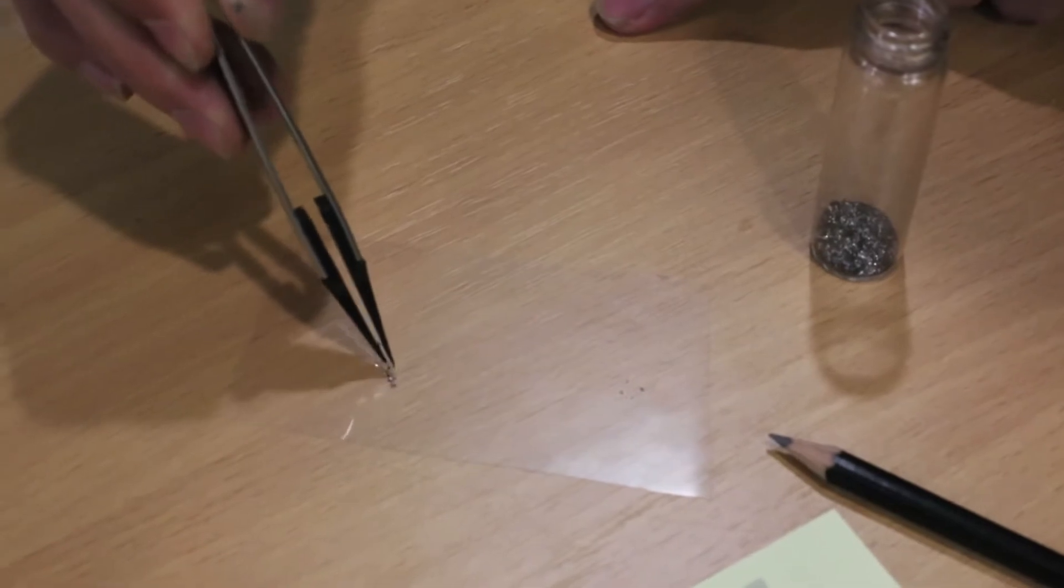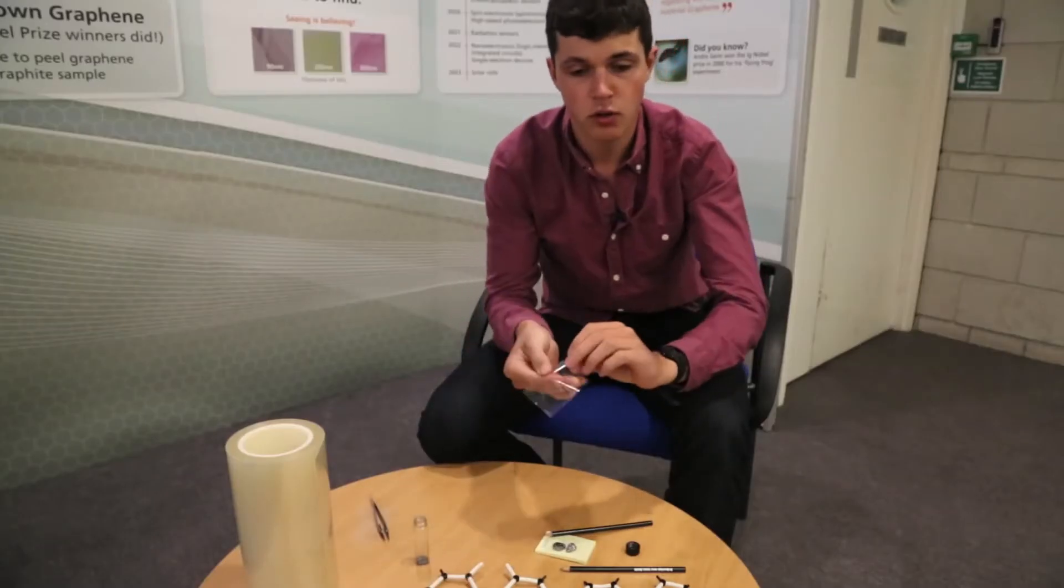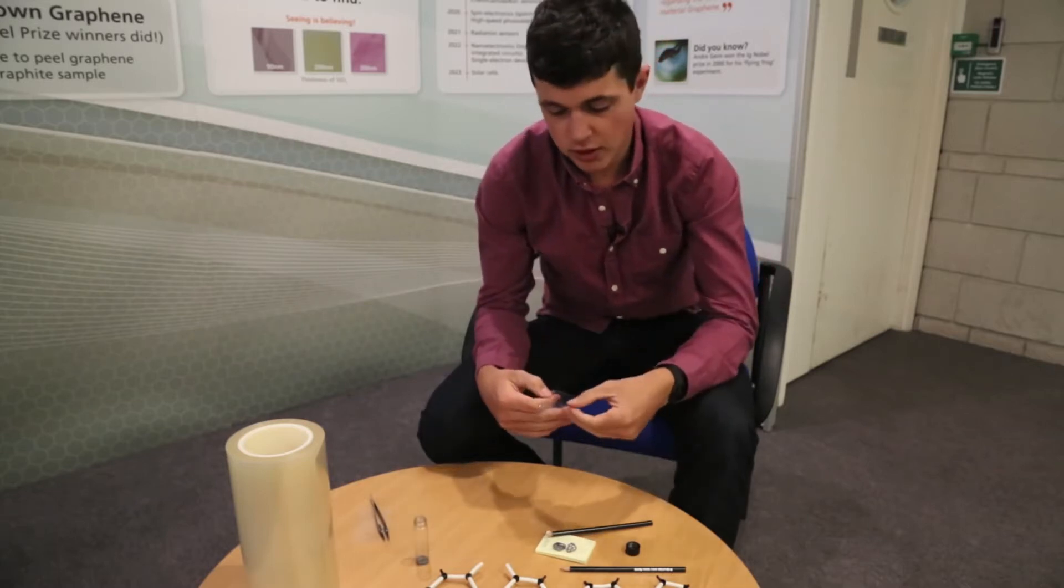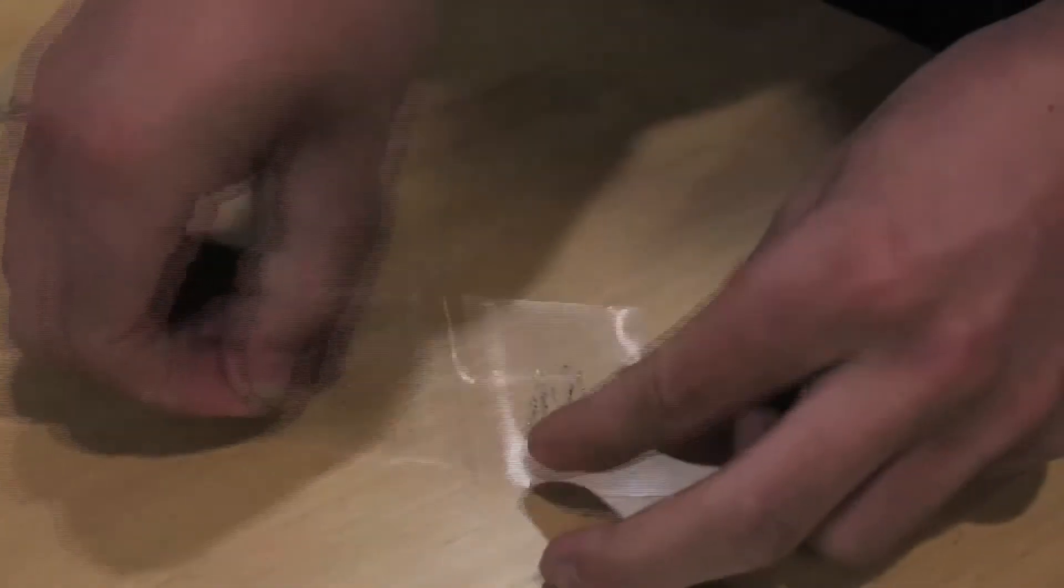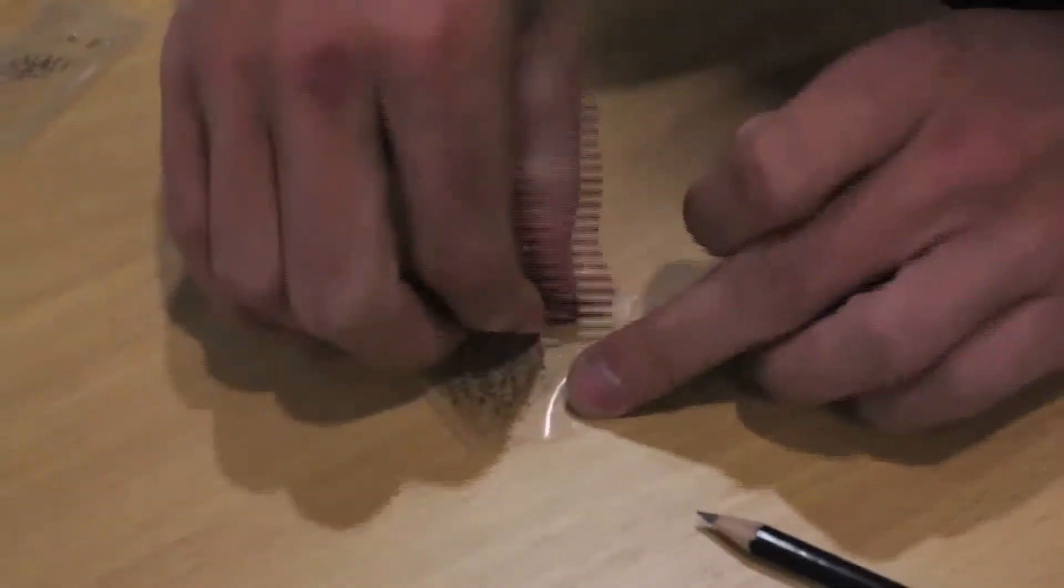And every time we pull the tape apart, we break our graphite up. We're cleaving it, pulling apart the layers. So the pieces of graphite we had in here originally would have contained many thousands of layers. And if we do this enough times, we can hopefully end up with some layers that are only one or two atoms thick.